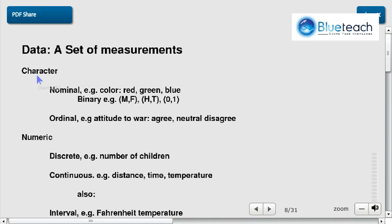So what can we measure? First we can measure a character. So it could be nominal, red, green, blue. It could be binary, male, female, agree, disagree, left handed, right handed.